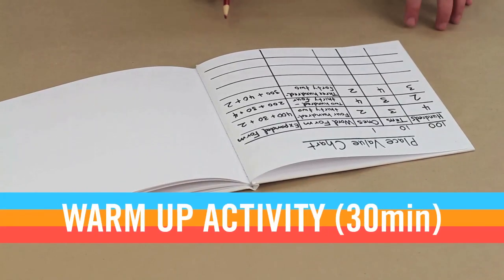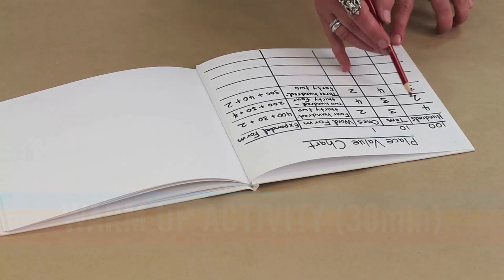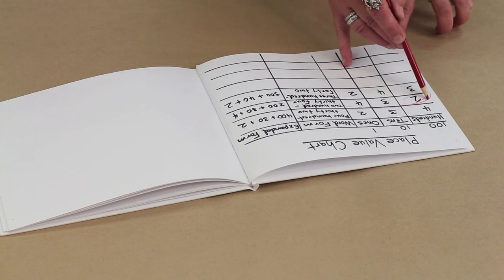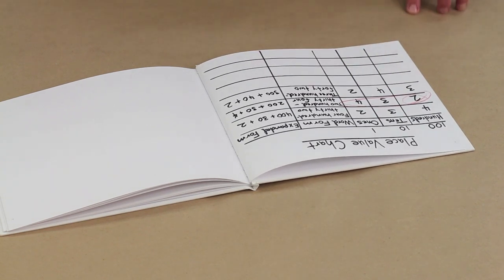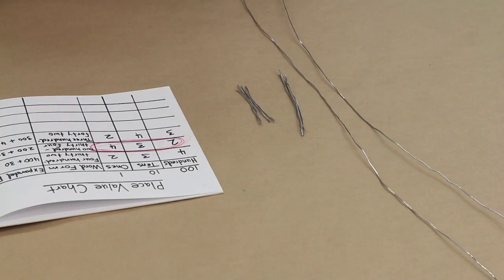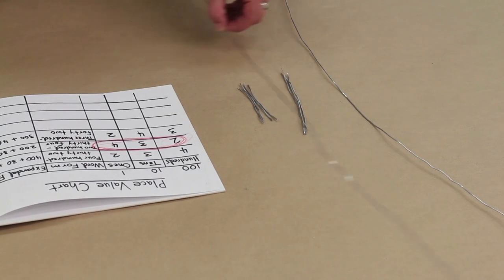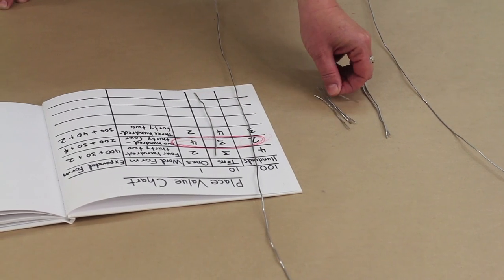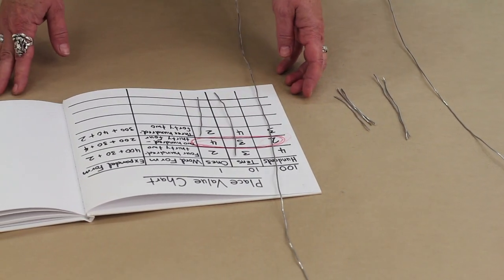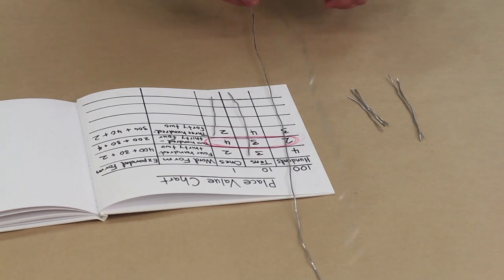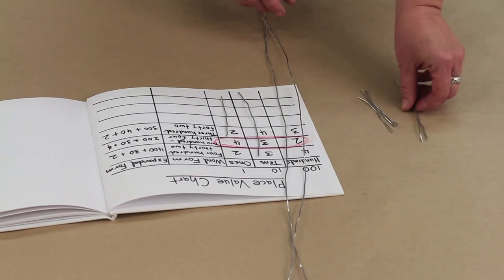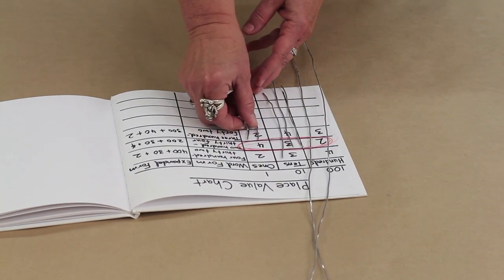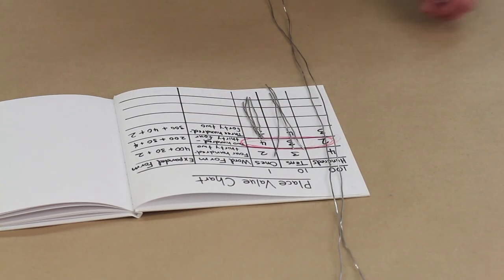Have each of your students choose one three digit number from the place value charts they made during the pre-session math lesson. Give your students wires of three different lengths. In their journal's place value chart, ask them to assign a length to each place value. A long line under the hundreds column, a medium line under the tens column, and a short line under the ones column. Then, take the number of wires needed to represent the digits in each place value for the three digit number they chose.